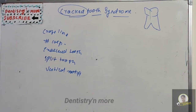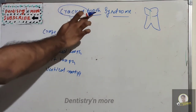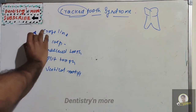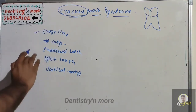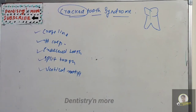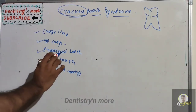Welcome back to another session in Dentistry and More. Today we have a topic from conservative dentistry: Crack Tooth Syndrome. The name itself gives an idea that the tooth has a fracture or crack present within it. When talking about longitudinal tooth fractures, there are various types such as craze line, fractured cusp, cracked tooth, split tooth, and vertical tooth fracture — but we are focusing only on Crack Tooth Syndrome.